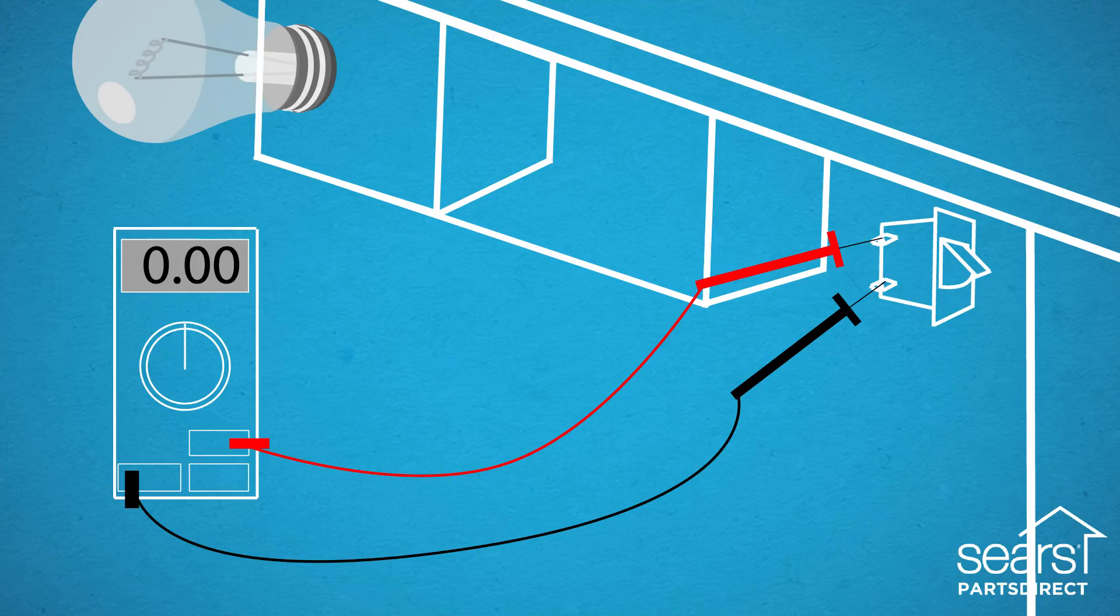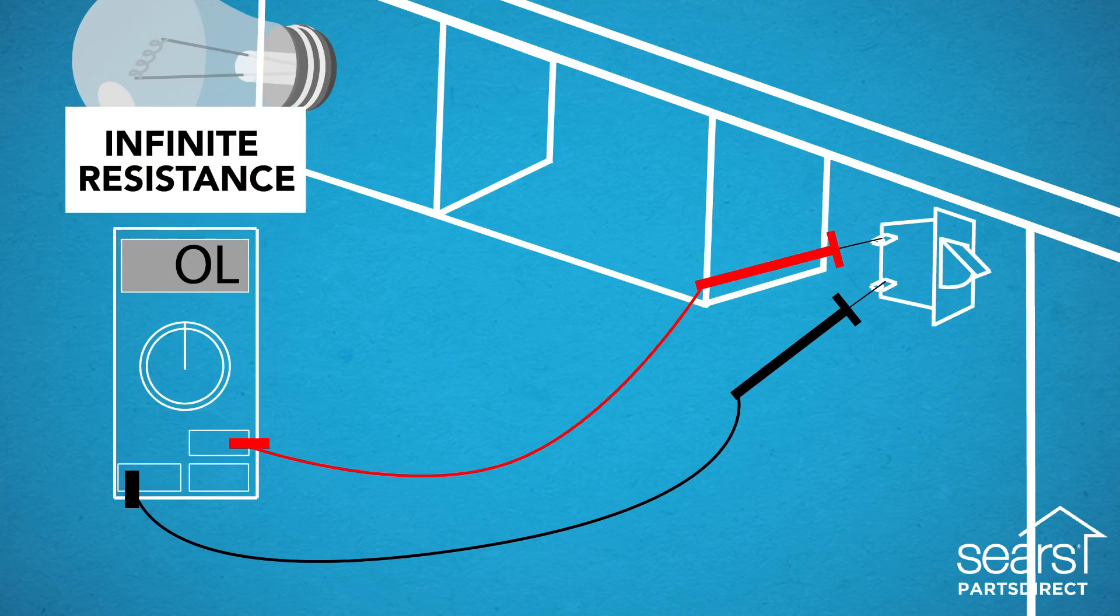You should measure near zero ohms of resistance or continuity through the switch with the switch plunger extended. If you measure infinite resistance through the switch, replace it.